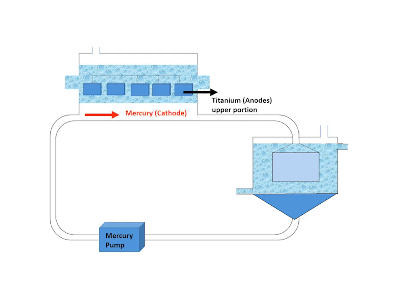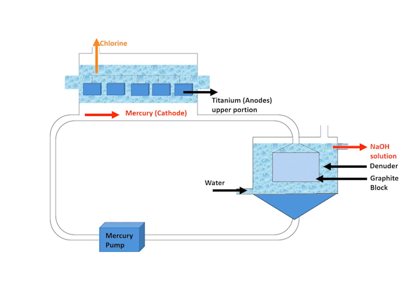A graphite block is present at the denuder, which is the lower portion. As a result of electrolysis, chlorine gas is obtained from the upper portion, whereas sodium hydroxide and hydrogen gas are collected separately from the lower portion. The flowing cathode, that is mercury, will be recycled for the next batch.